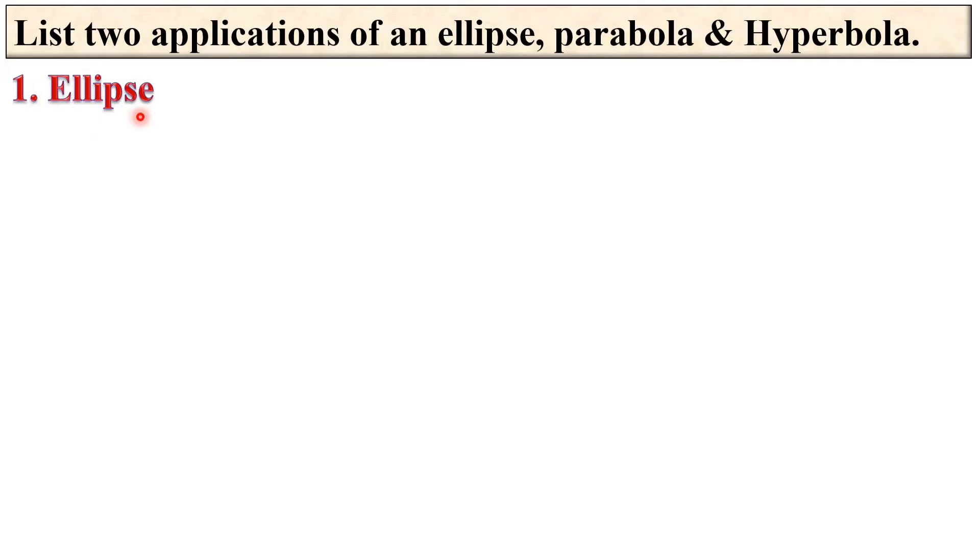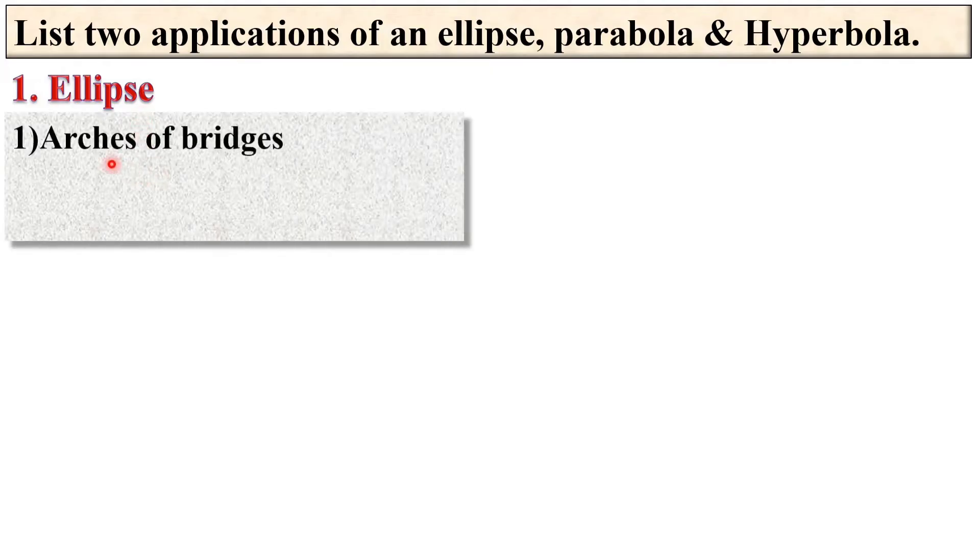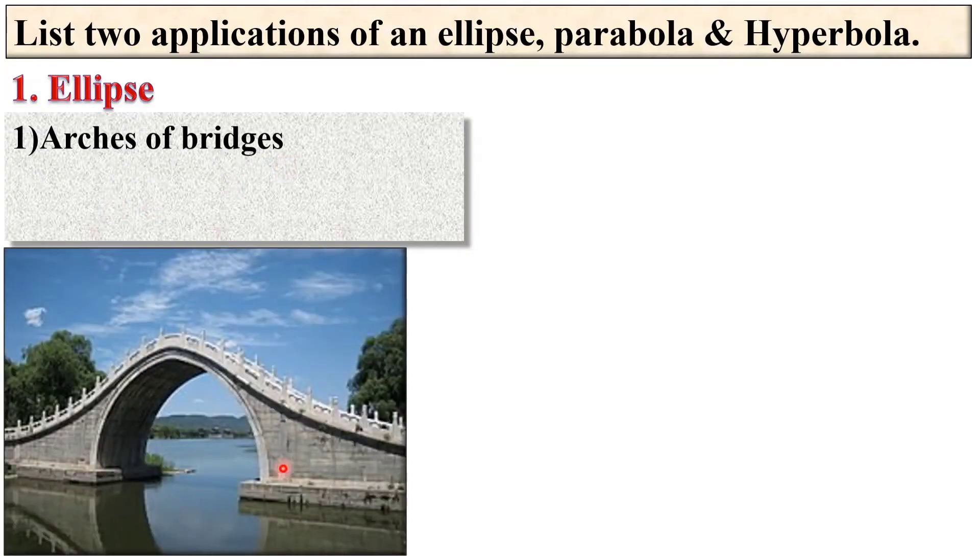Let us start with the first one ellipse. It can be used in the arches of bridges. Here you can see the shape is like an ellipse.